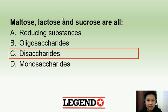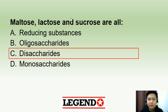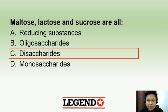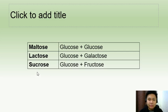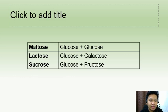Then you have oligosaccharides, which are comprised of three to ten monosaccharides, and polysaccharides, which are comprised of more than ten. Choice A is incorrect since sucrose is non-reducing, although maltose and lactose are reducing. So the correct answer here is letter C — this would be the composition of these three disaccharides.